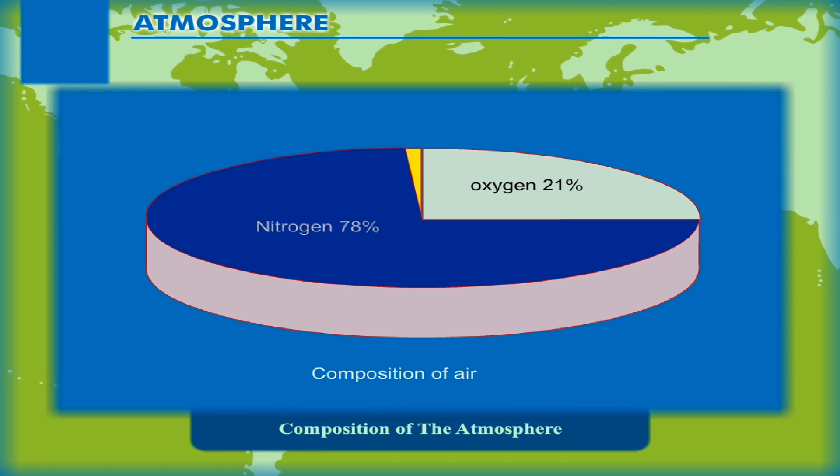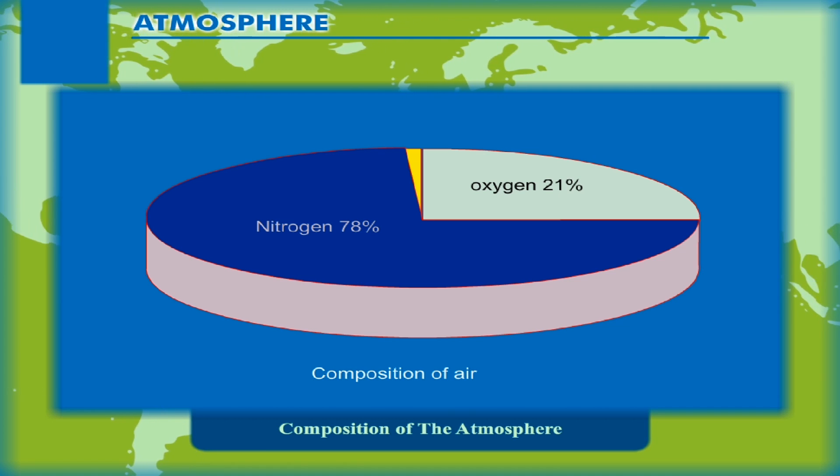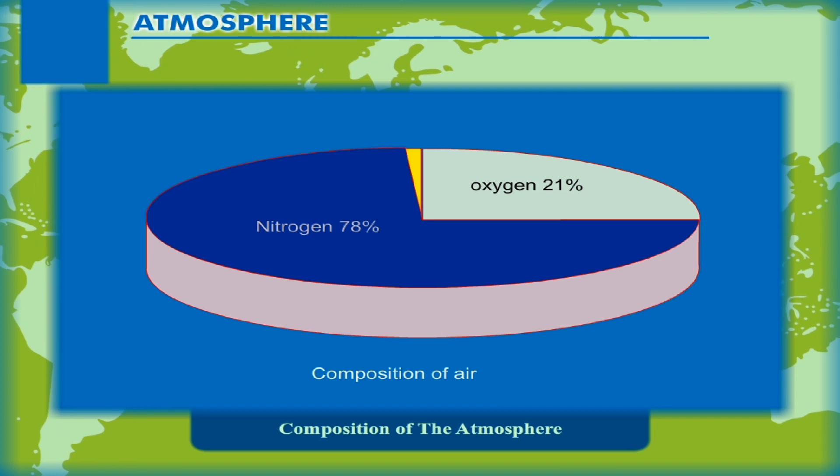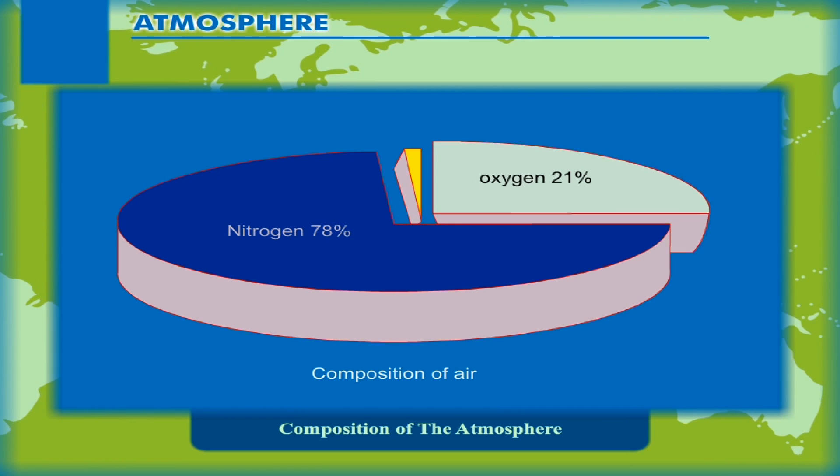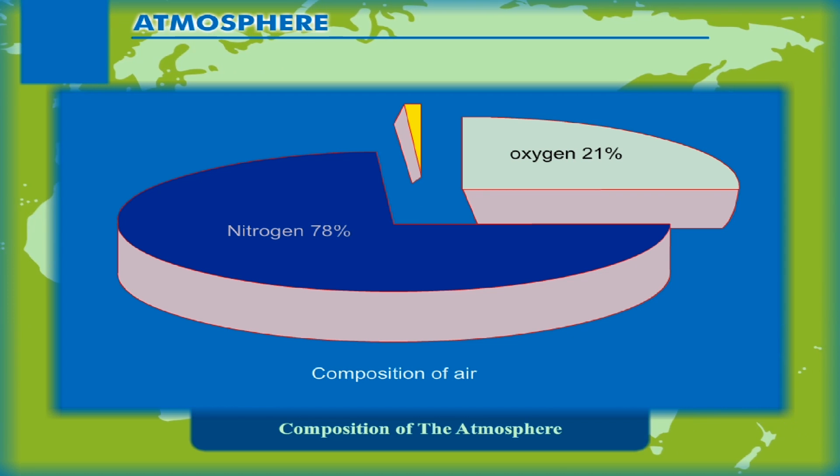Composition of the Atmosphere: Air is a mixture of several gases in different proportions. The composition is as follows: Nitrogen 78%, Oxygen 21%, Other gases 1%. Some dust particles are also present in the atmosphere.